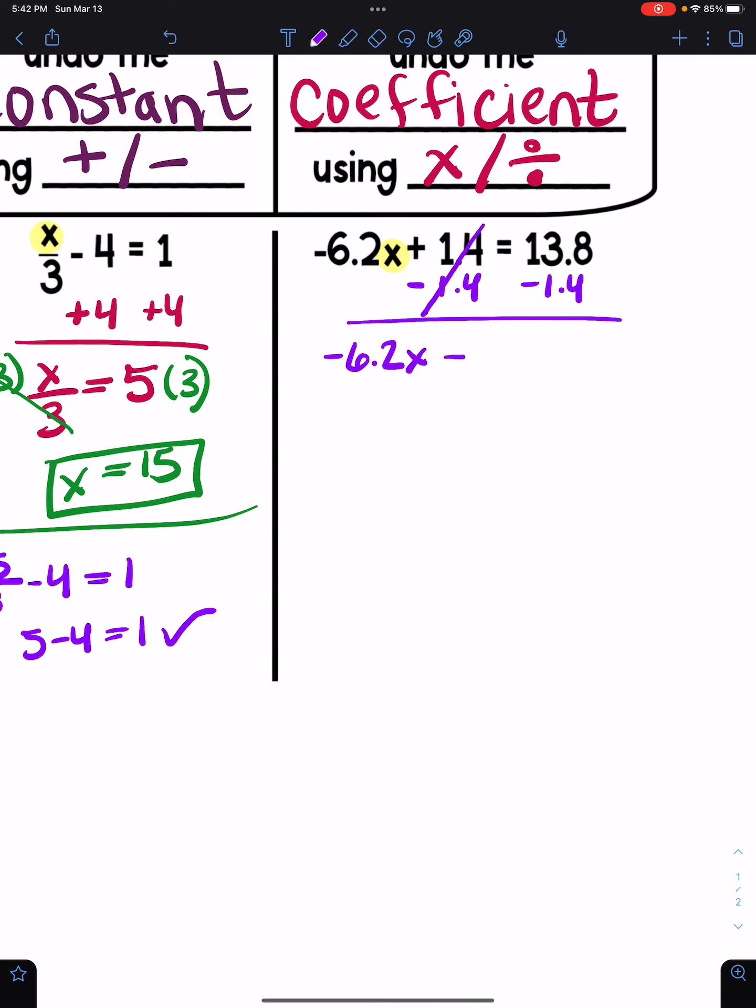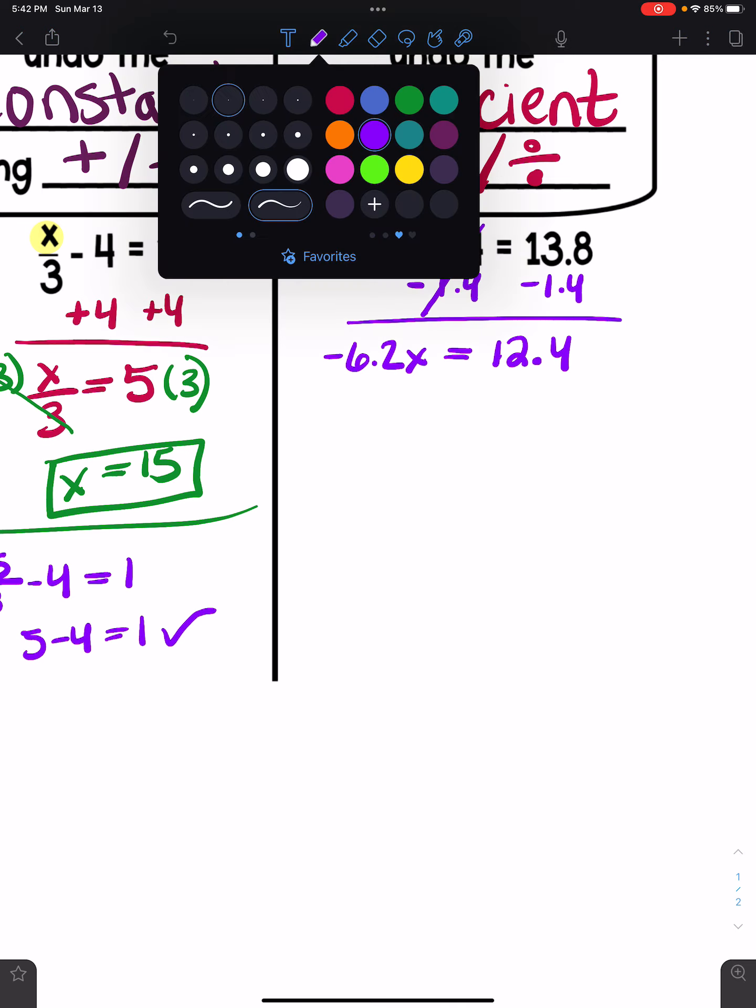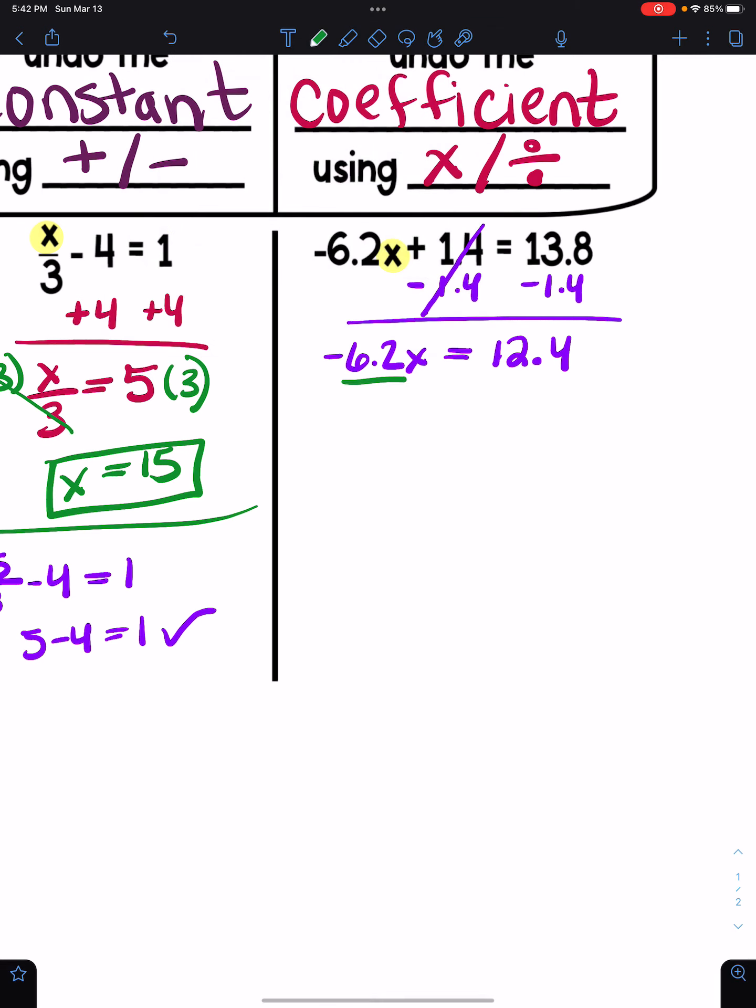That cancels. This is going to be a 12.4. And then since x is being multiplied by negative 6.2, I'm going to divide both sides by negative 6.2. Over here it cancels, give me 1. 6.2 times 2 is 12.4, but a positive divided by negative is a negative. So my answer is going to be negative 2.